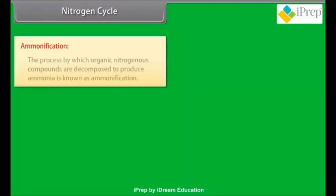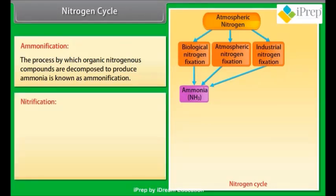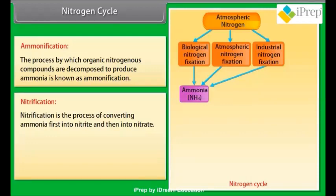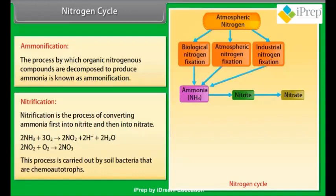Ammonification: the process by which organic nitrogenous compounds are decomposed to produce ammonia is known as ammonification. Nitrification: nitrification is the process of converting ammonia first into nitrite and then into nitrate. The reactions are: 2NH₃ + 3O₂ → 2NO₂⁻ + 2H⁺ + 2H₂O, and 2NO₂⁻ + O₂ → 2NO₃⁻. This process is carried out by soil bacteria that are chemoautotrophs.